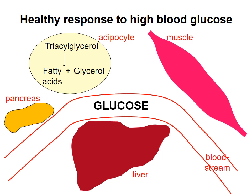In a healthy person, high blood glucose is sensed by the pancreas, which secretes insulin into the bloodstream. Insulin has numerous effects on energy metabolism. For one thing, insulin inhibits release of fatty acids from triacylglycerol in adipocytes.